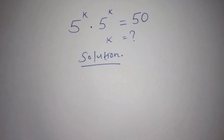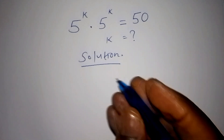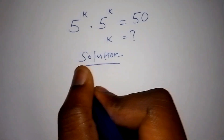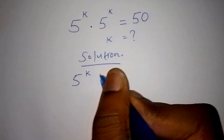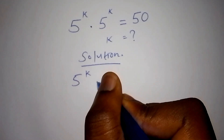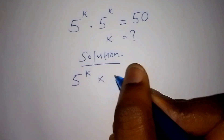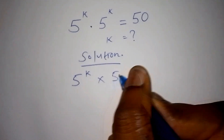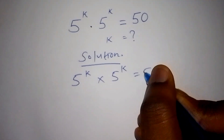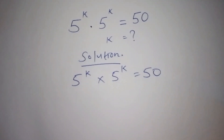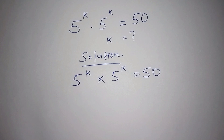Now, what does this mean? So 5 to the power of k can also be written as 5 to the power of k, multiplied by 5 to the power of k, equals 50. From there we proceed.